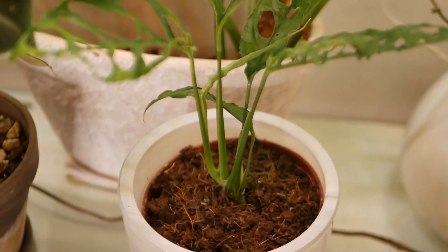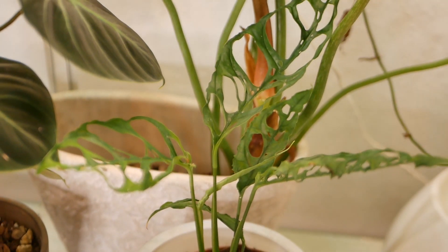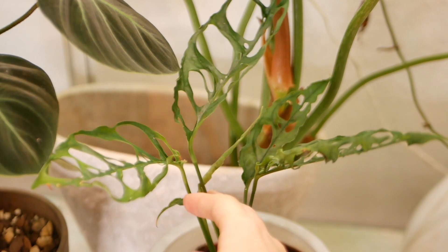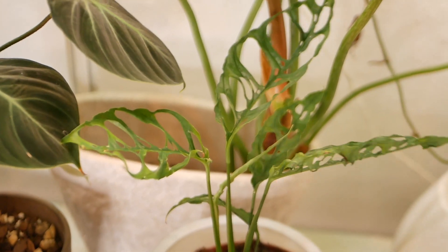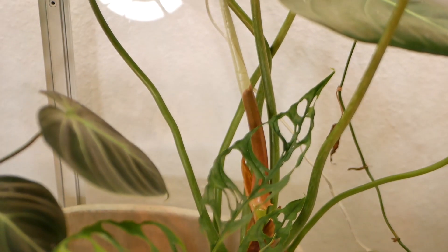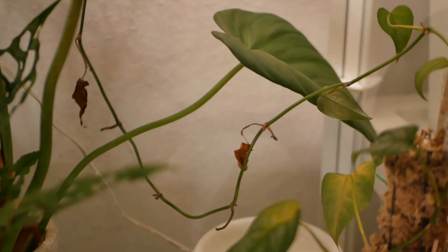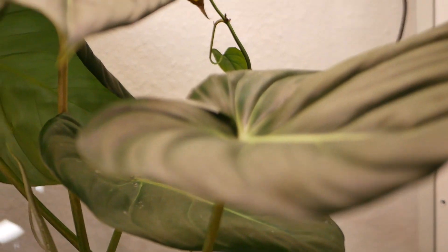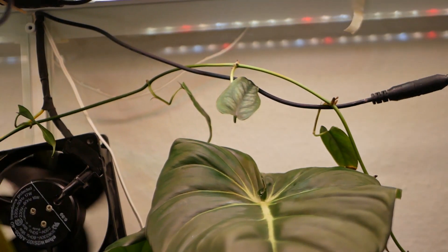My monstera obliqua which is also putting out a new leaf, and my philodendron dean mcdowell which is also putting out a new leaf, and last but not least my monstera siltipicana.